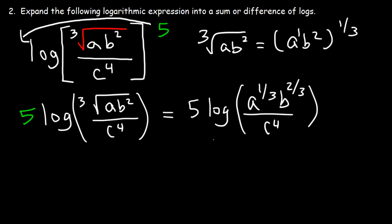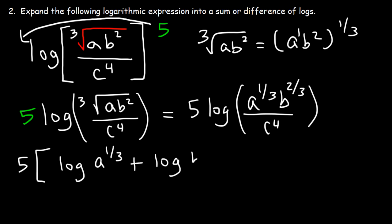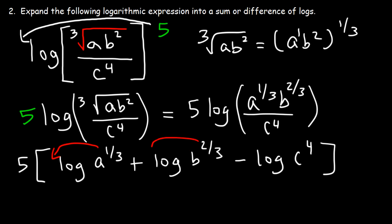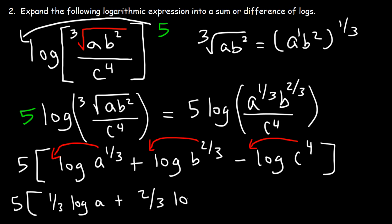Now we can expand into multiple logs. So it's going to be five times log a to the one third plus log b to the two thirds. And because z is on the bottom, it's going to be negative log z to the fourth power. The last thing we need to do is move the exponents back and write them as coefficients. So it's five times one third log a plus two thirds log b minus four log c.